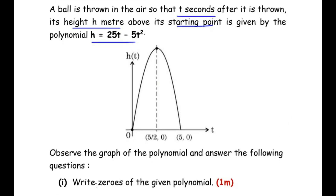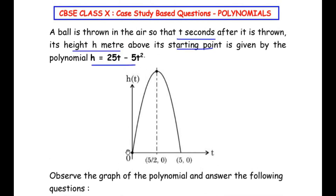The first question asks us to write the zeros of the given polynomial. A graph has been given and it is in the form of a parabola, because the given polynomial is a quadratic equation. Quadratic equations are always in the form of parabolas — either n-shape or u-shape. This parabola represents the trajectory covered by the ball. The y-axis represents the height covered by the ball and the x-axis represents the time taken.